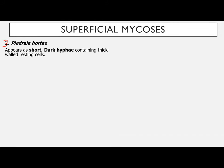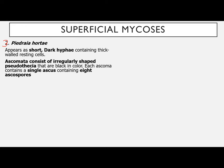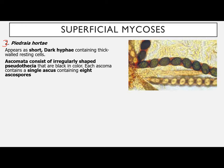The third organism is Piedraia hortae. They appear as short dark hyphae containing thick-walled resting cells, with an ascomata consisting of irregularly shaped pseudothecia that are black in color. Each ascoma contains a single ascus containing ascospores — at a minimum of at least eight ascospores per ascus. Piedraia hortae is known to cause Black Piedra, a nodular infection of the hair shaft.